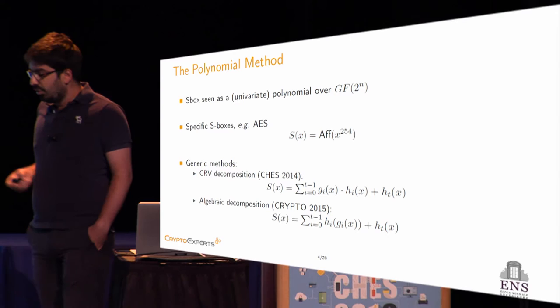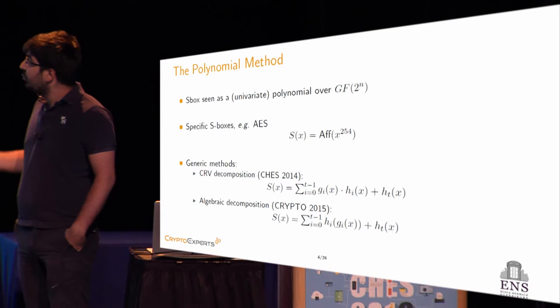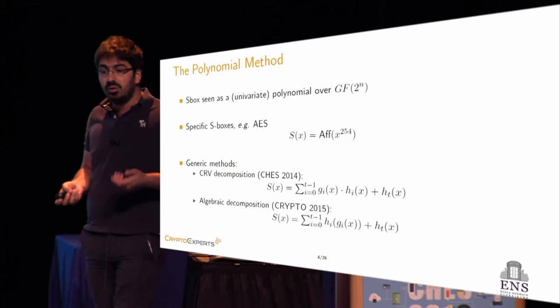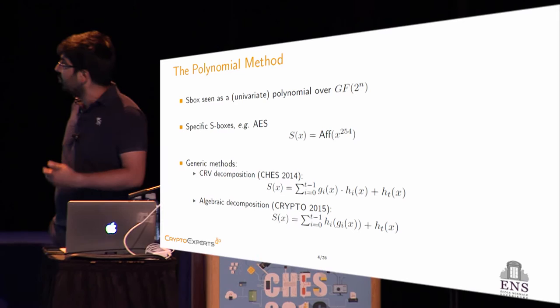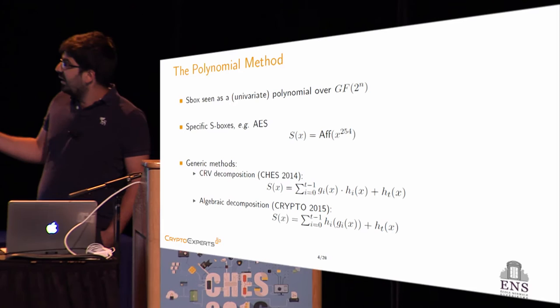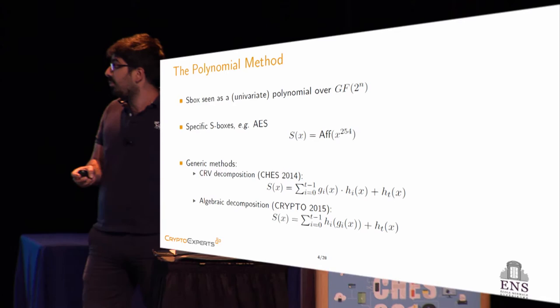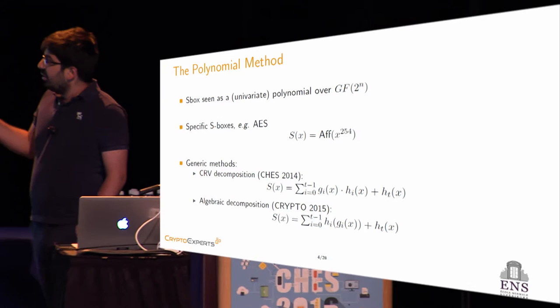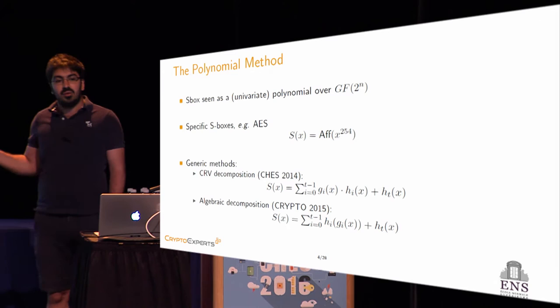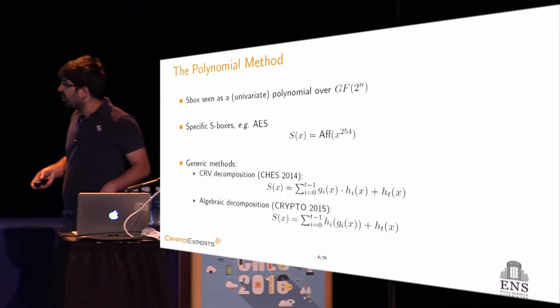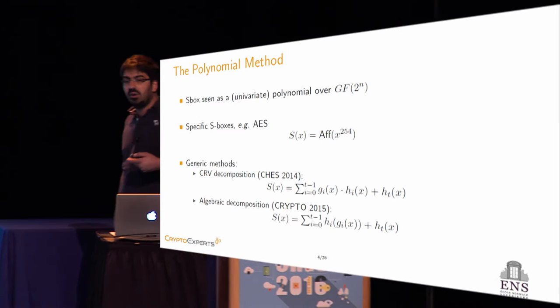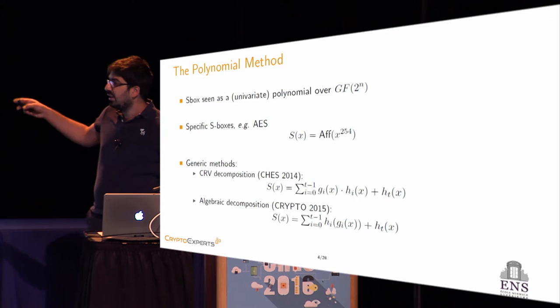One of the main approaches is to look at the S-box as a polynomial over GF(2^n) and try to find a representation with a minimum number of calls to this building block. For example, for specific S-boxes we rely on their algebraic structure — for AES, it's just the exponentiation of a monomial to the power 254 combined with an affine transformation. There also exist generic methods: the CRV decomposition proposed at CHES 2014 looks at the S-box as a sum of T products of polynomials, each performed with ISW multiplication. The second best method, algebraic decomposition, proposed at Crypto 2015, looks at the S-box as a sum of T compositions of algebraic degree-2 functions, each evaluated with CPRR.